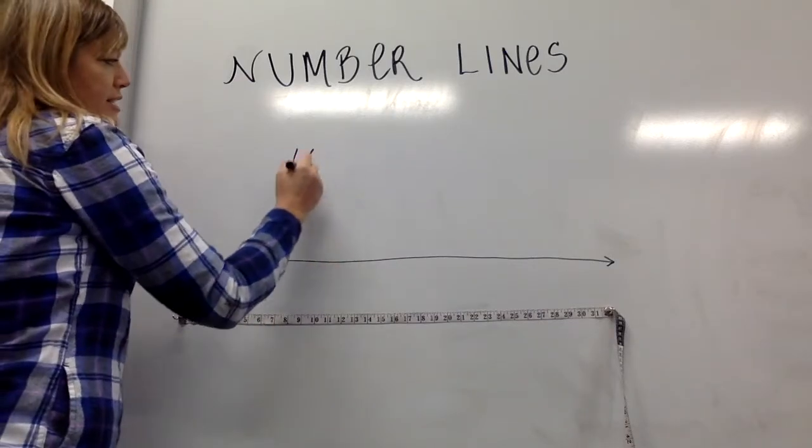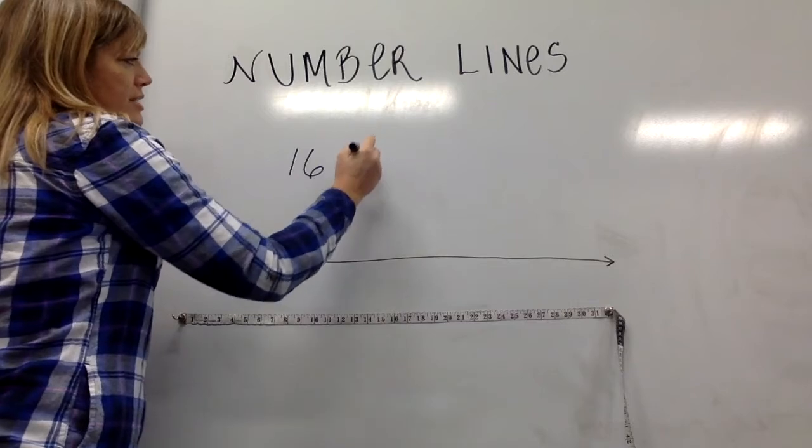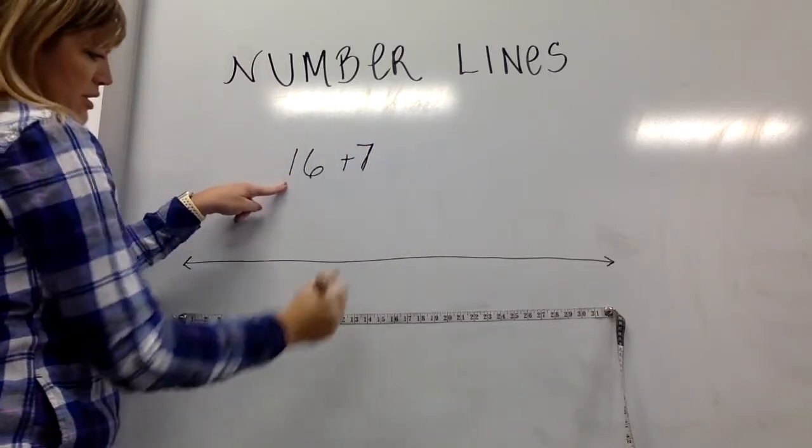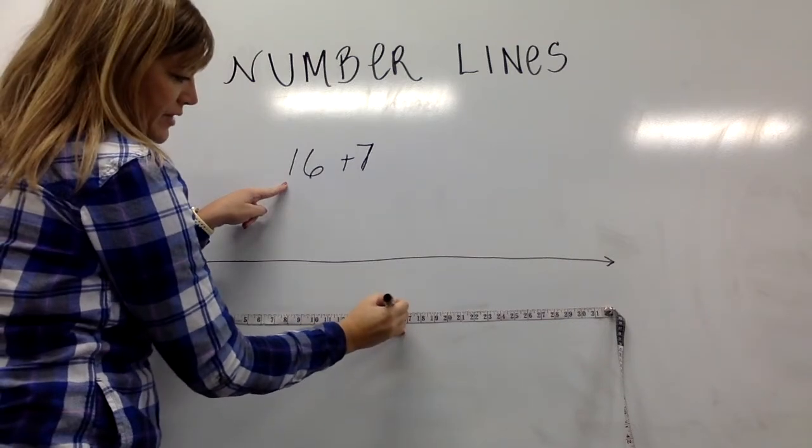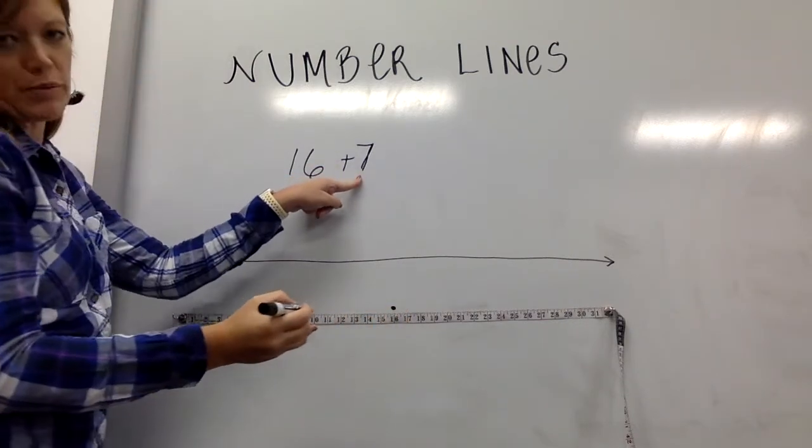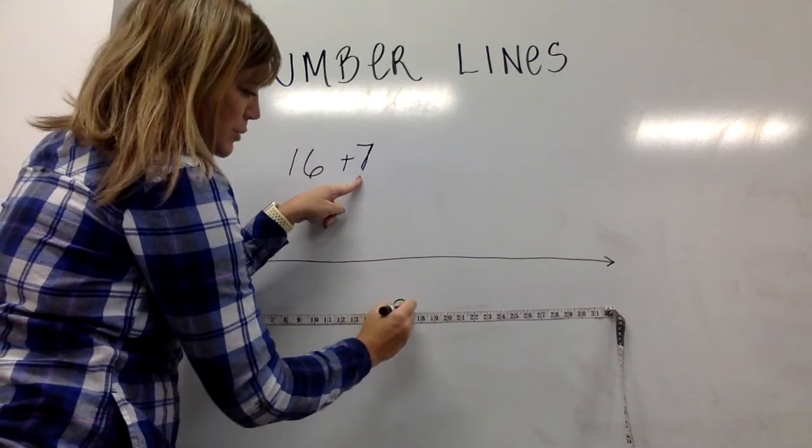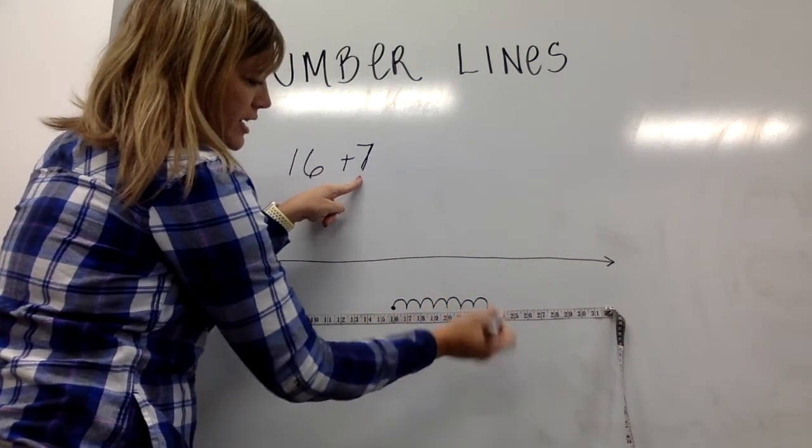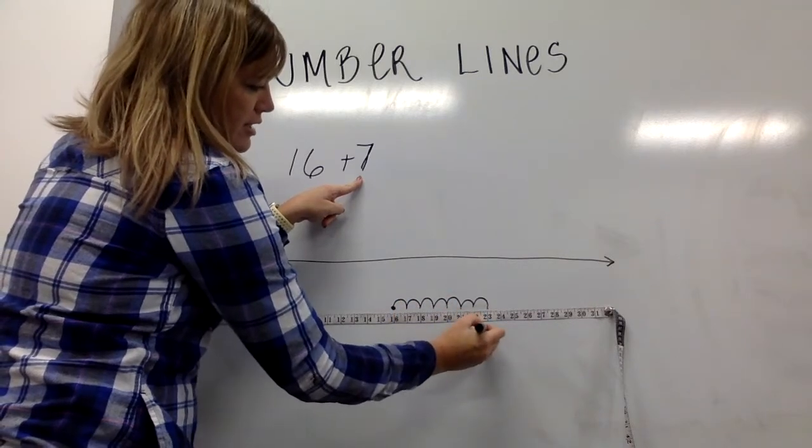So given an equation like 16 plus 7, on a fixed number line we would start at this first number, 16, and we would think about the number of jumps we would need to take. So seven jumps—one, two, three, four, five, six, seven—and I would land at 23.